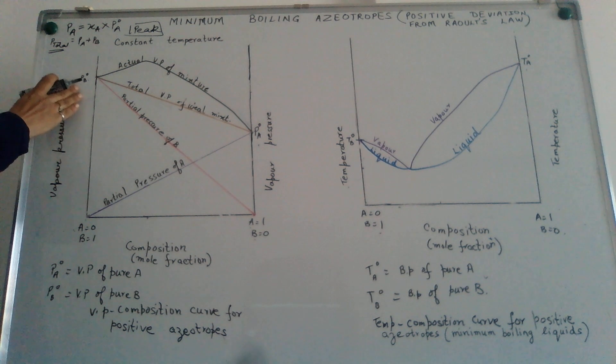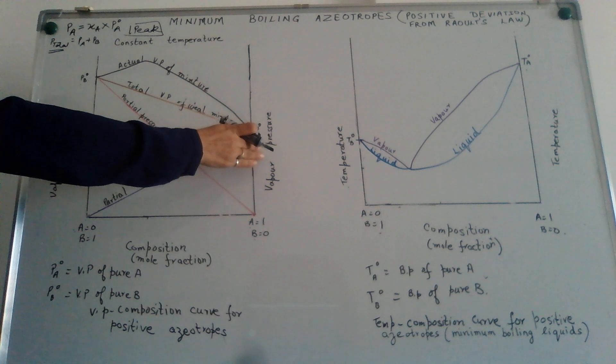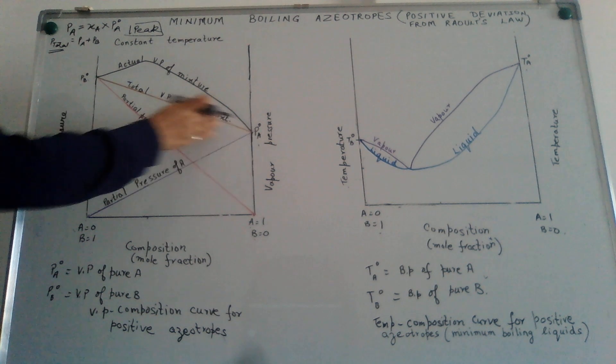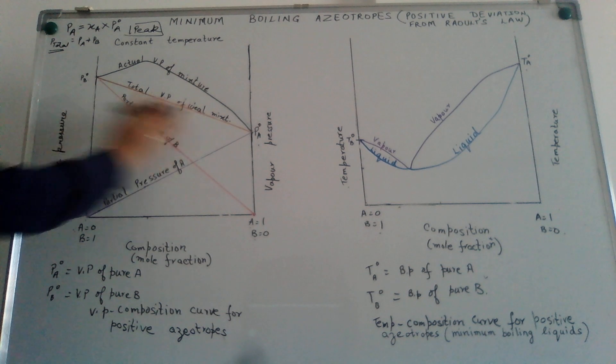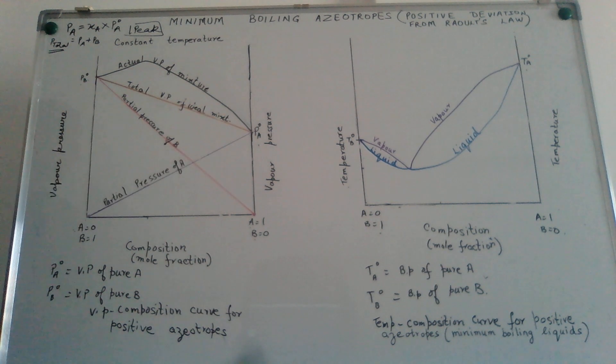Now, here Pb0 is the vapor pressure of pure B. Pa0 is the vapor pressure of pure A. The lines that you see here, the brown line, the red, the purple, these indicate an ideal situation what an ideal solution should be like.